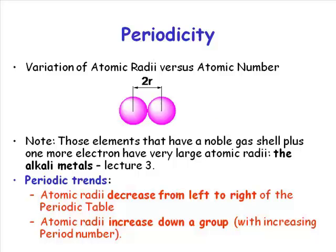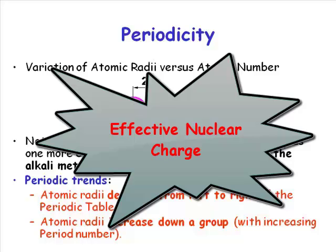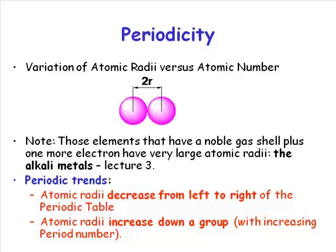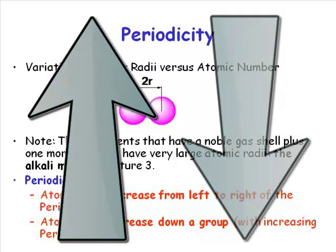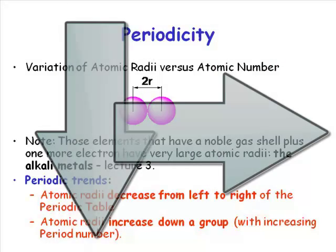Effective nuclear charge is such a powerful concept and it explains so much of the periodicity of the patterns that we see in the periodic table. It's slightly easier to understand what happens as you go down a group. As you go down a group, you are increasing the principal quantum number, which gives the energy of that shell. The higher in energy the shell is, the further away from the nucleus. So you see an increase in atomic radii as you go down a group, and a decrease as you go left to right.